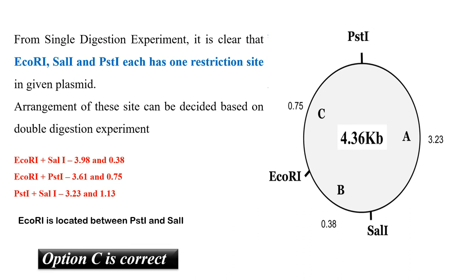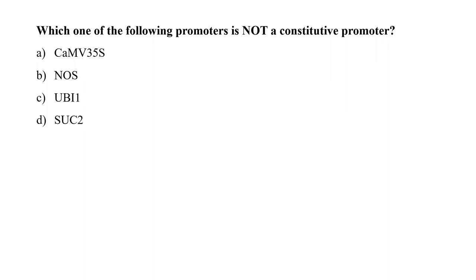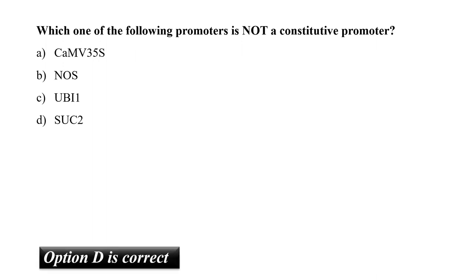The next question is: which one of the following promoters is not a constitutive promoter? Promoters control the binding of RNA polymerase and transcription factors; the promoter region drives transcription and determines timing of gene expression. Constitutive promoters are those which are always active, and examples include CaMV35S, NOS, and UBI1. SUC2 is not always active — it is active under specific circumstances and can be switched on and off — so it is not a constitutive promoter. Our correct option is D, that is SUC2.